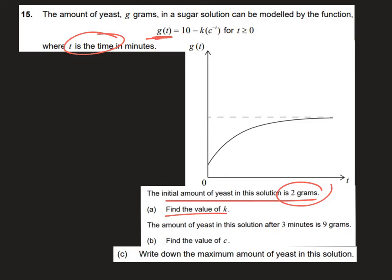If we look at our function, we are told that the initial amount of yeast is 2 grams. Whenever you see initial, we can imply that the time is equal to 0. So we know that g(0) is the initial amount of yeast, which is 2. We're going to say 2 = 10 - k.